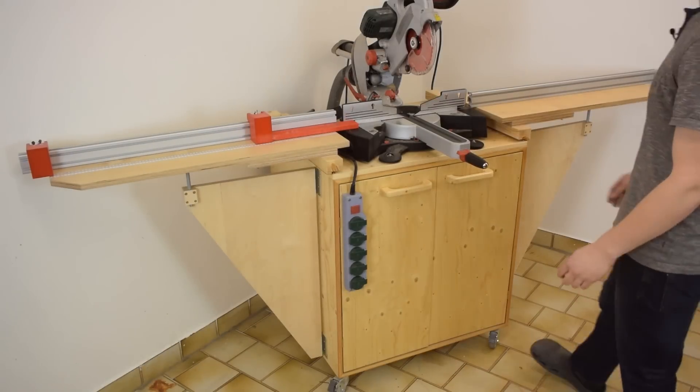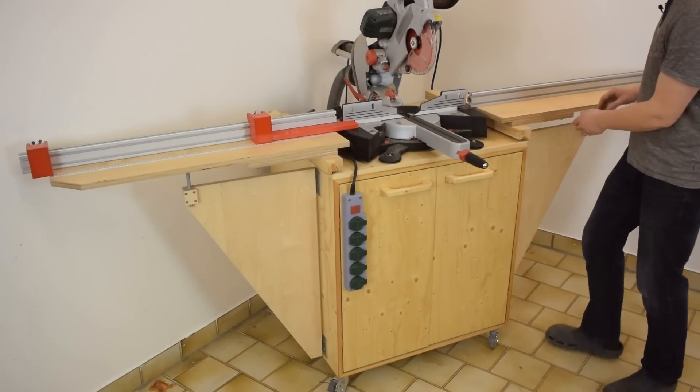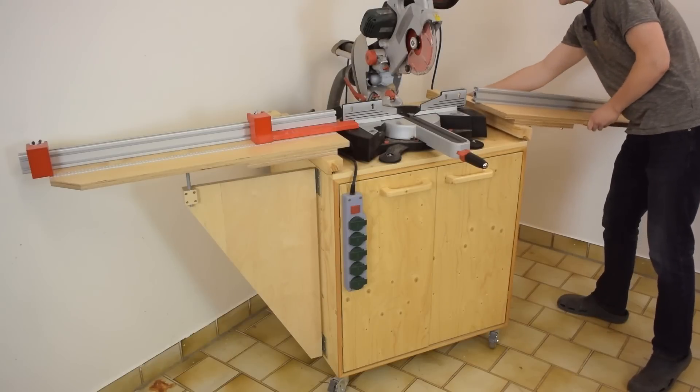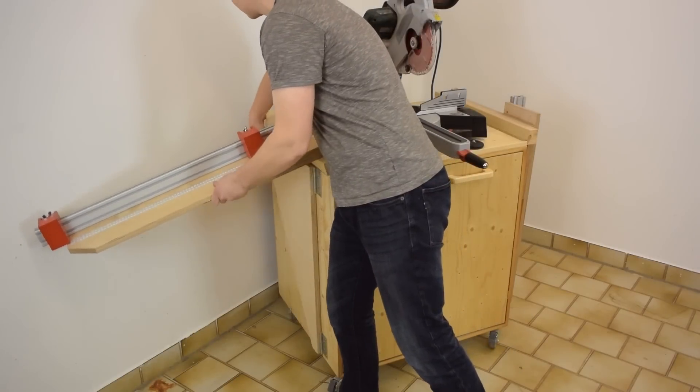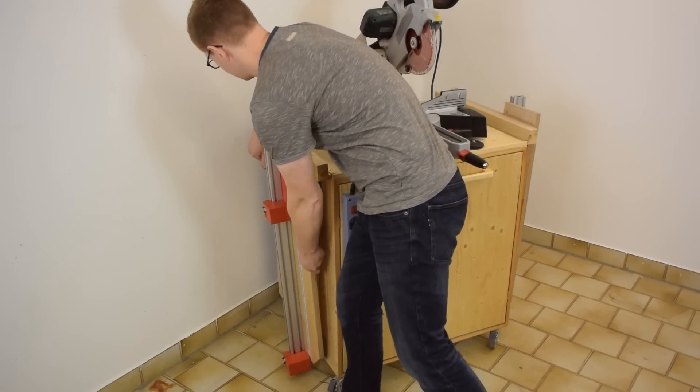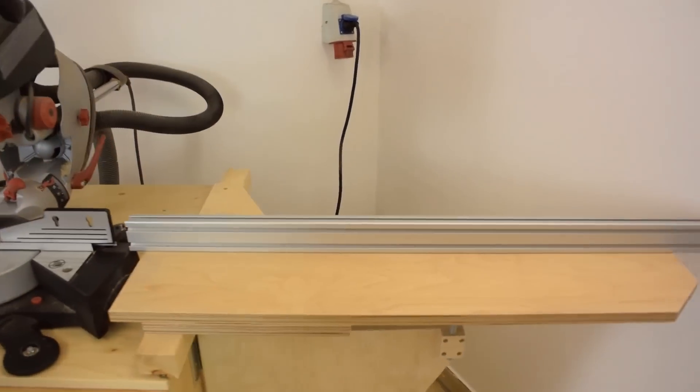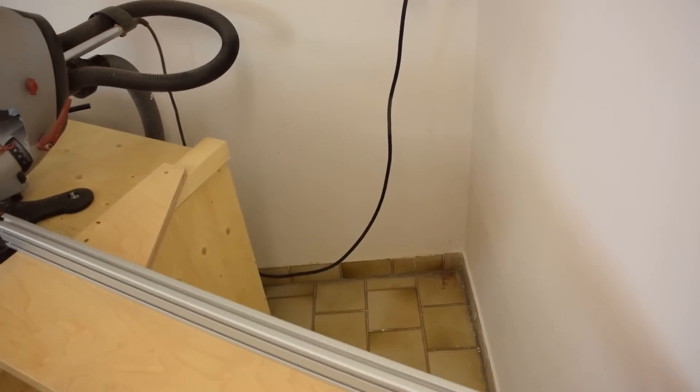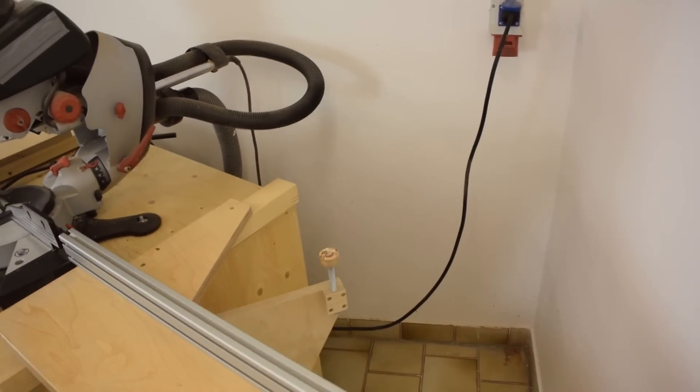Now the station mainly consists of a biscuit joint box made from spruce plywood and it has foldable wings. I made them foldable because especially on this side there's still a lot of space behind the station that I want to have access to.